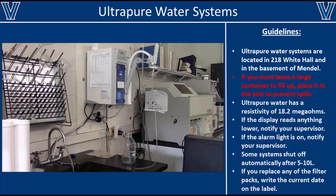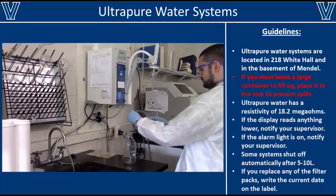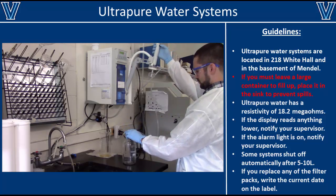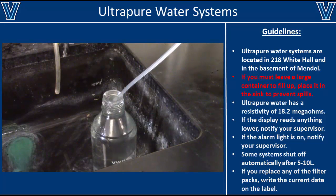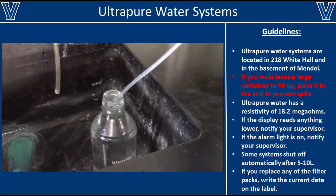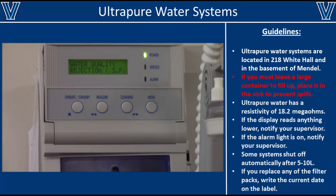Another commonly used piece of equipment in all of our labs is the ultrapure water system. Ultrapure water should be used for all of your buffers, since tap water and even distilled water may have some contaminants that could interfere with your reactions. To collect ultrapure water, place the dispensing hose inside your bottle and pull the trigger as shown here. Do not let bottles fill up on the bench. Instead, put them in the sink just in case you forget about them and they overflow, as this can flood the lab and damage many expensive pieces of equipment. When collecting ultrapure water, you should always check the readout on the system to ensure that the water is ultrapure.